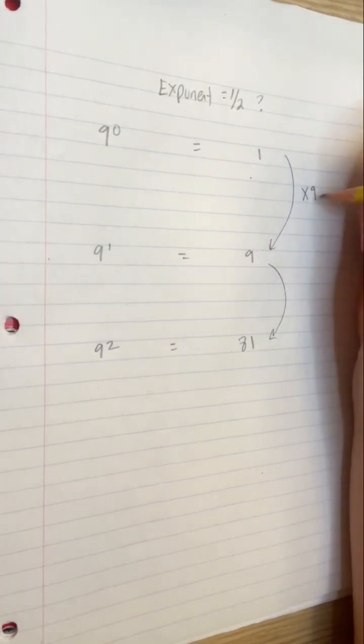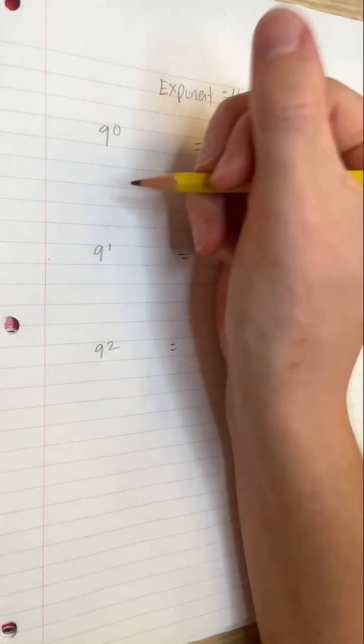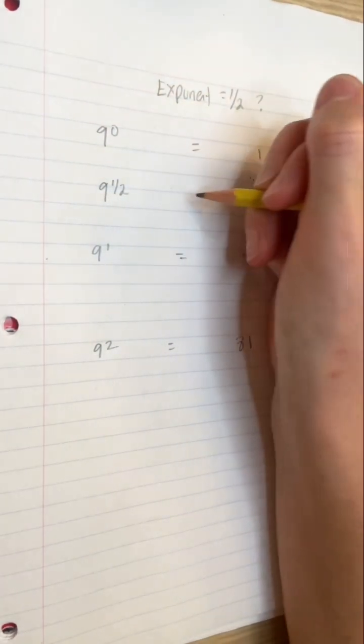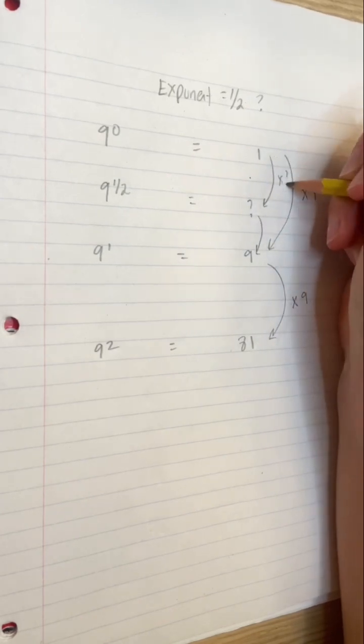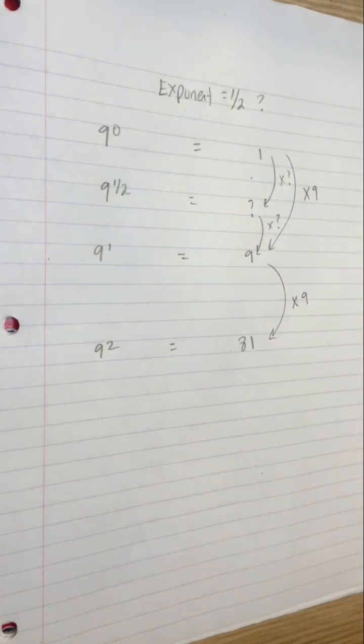Notice that each time we increase the exponent by 1, our value multiplied by an additional 9. But what if we split up that step into two equal parts? What happens when we increase our exponent by 1 half?